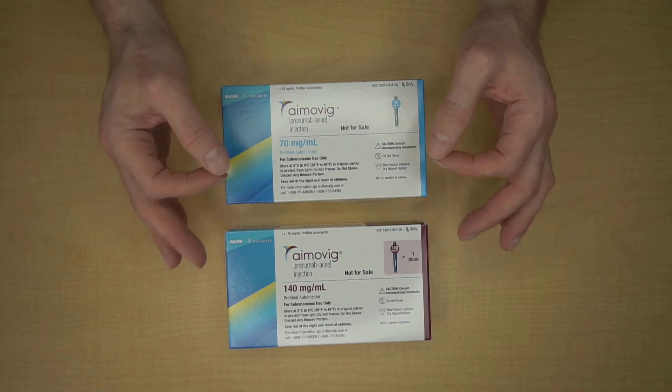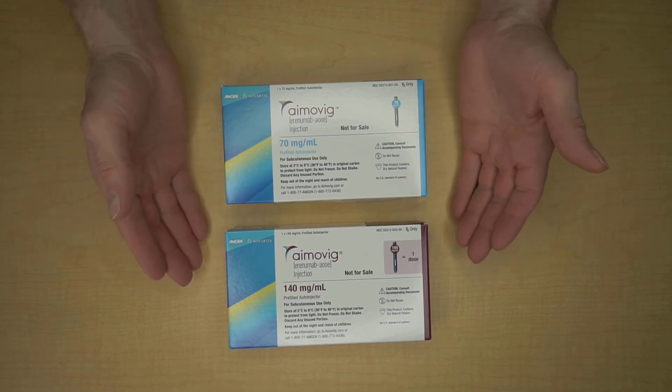You can take either 70 or 140 milligrams of Amovig a month. You don't need a loading dose, and you're going to discuss which dose is right for you with your doctor.